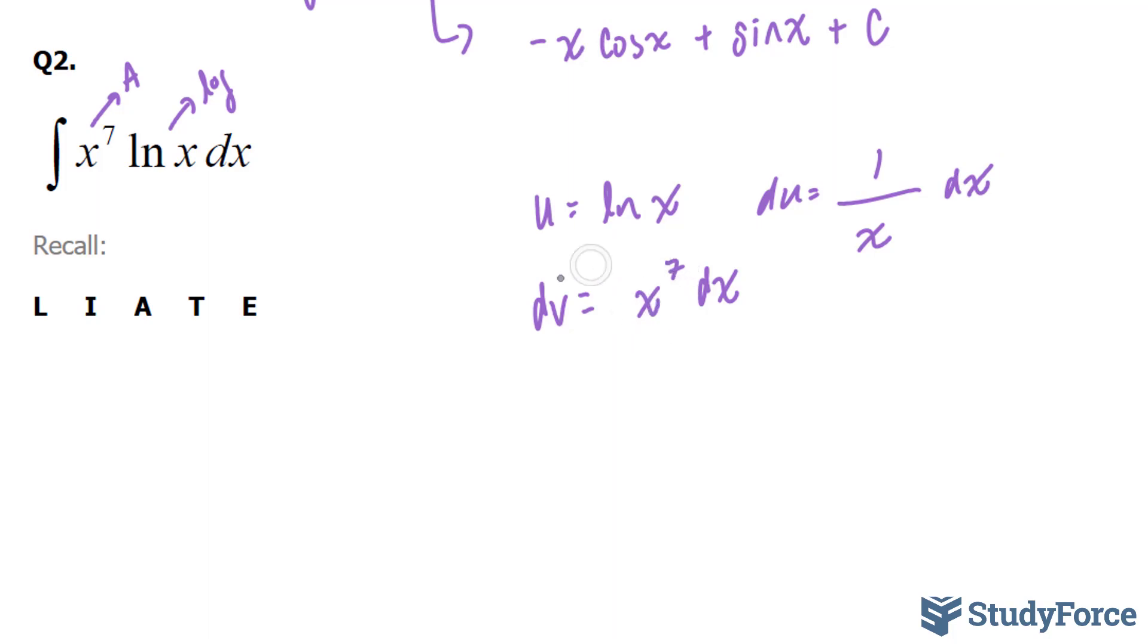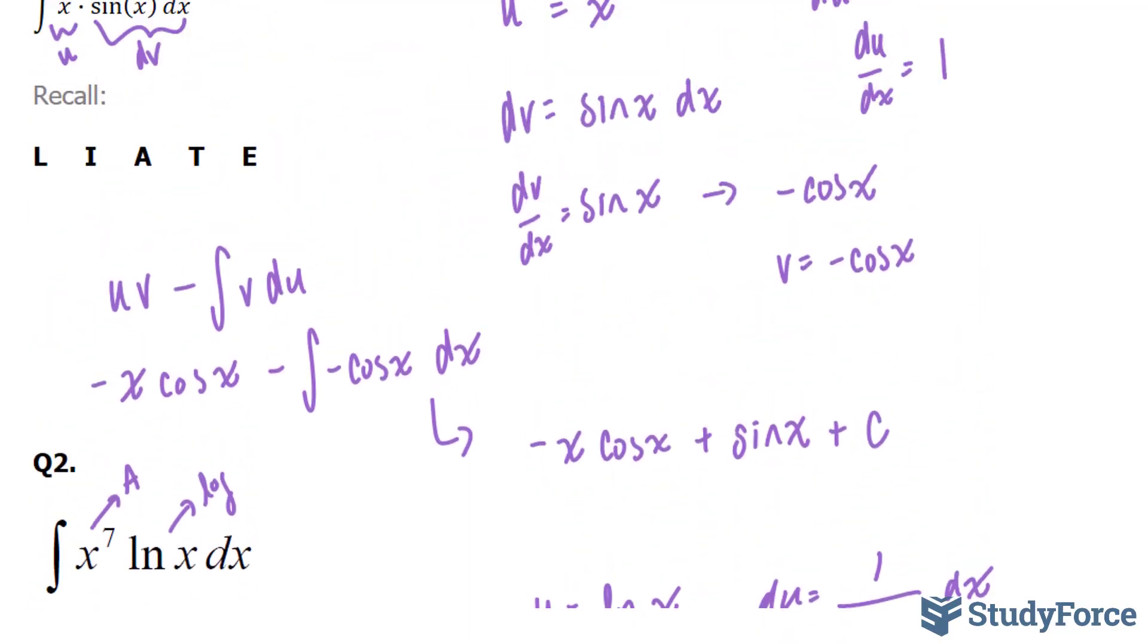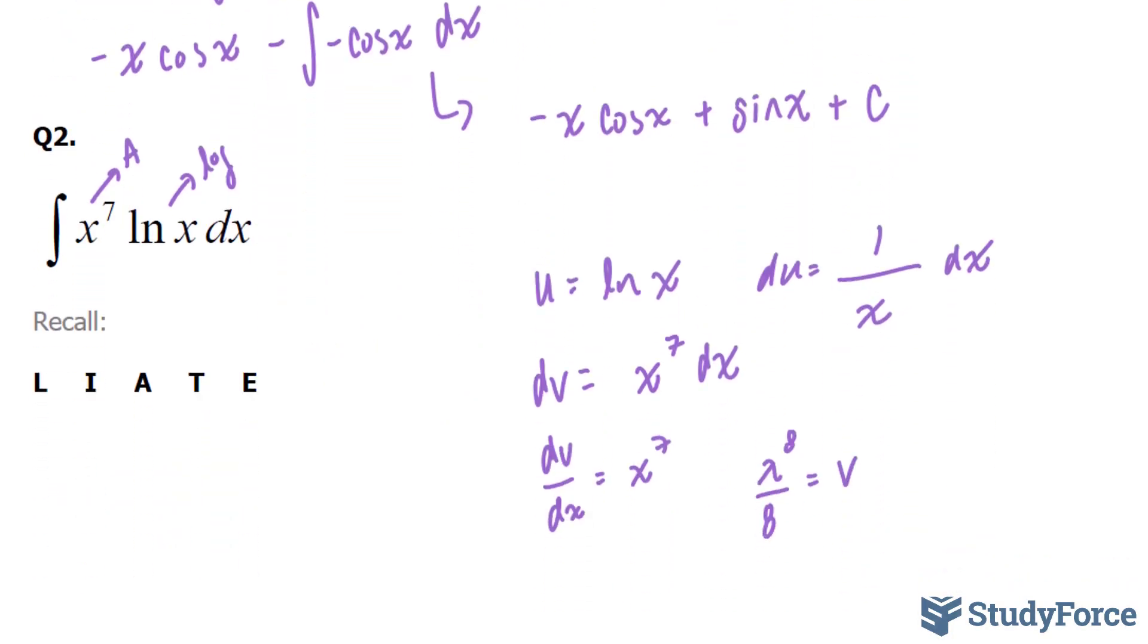Now we're going to find the integral of this. Remember, this is the same thing as saying dv/dx equals x to the power of 7. The integral of x to the power of 7 is x to the power of 8 over 8, and this right here will equal to your v. Now let's substitute everything that we know into the following. So u times v: u was equal to ln x times v, x to the power of 8 over 8, minus the integral of v du.